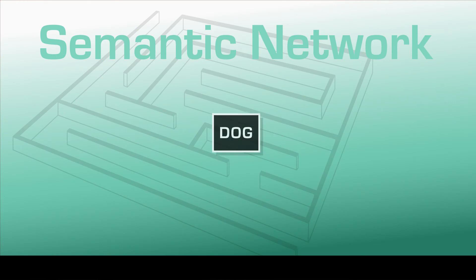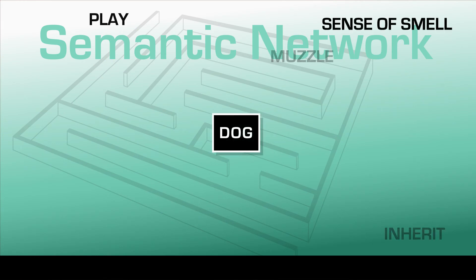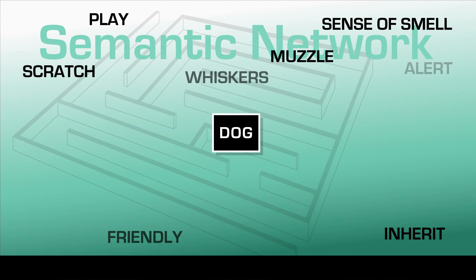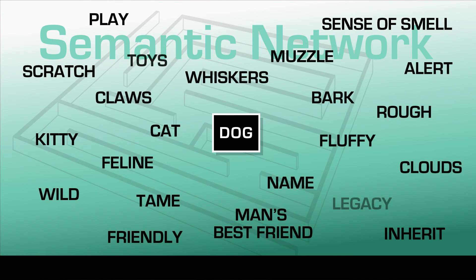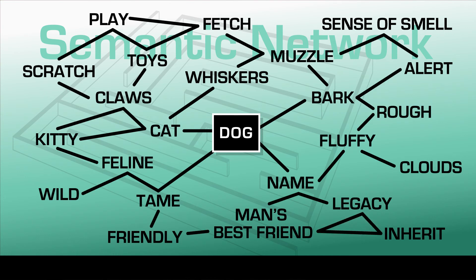Imagine that you have one idea stored in your memory. All of the connections you can make to different concepts serve as retrieval pathways. That way, if you forget one piece of information or one connection, that's okay — you've got many other ways that you can access that information later.